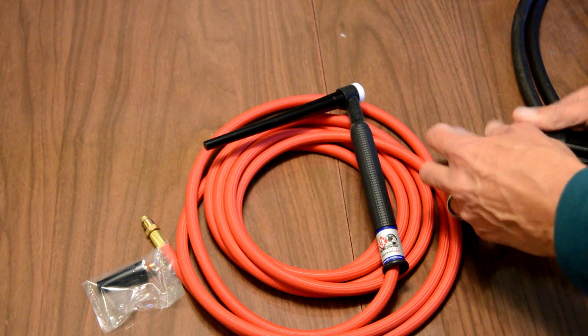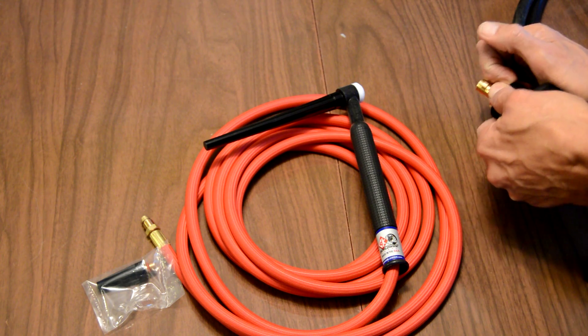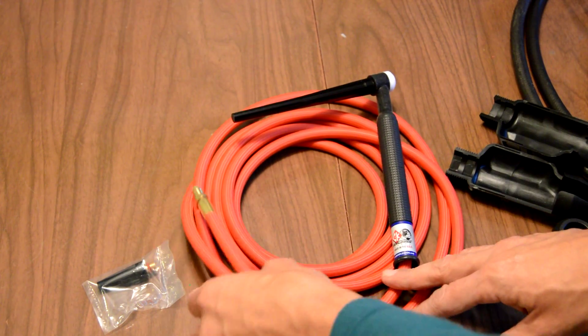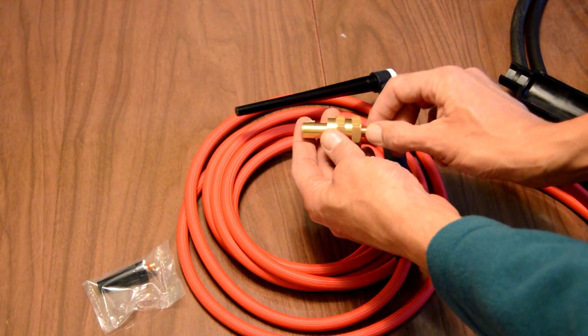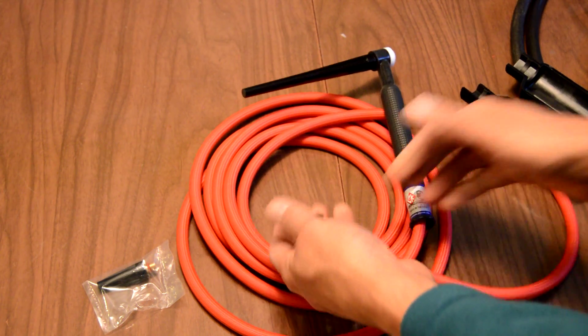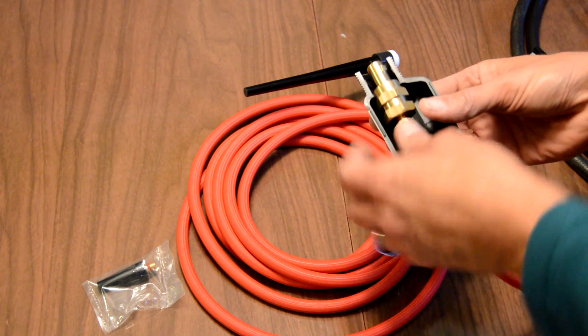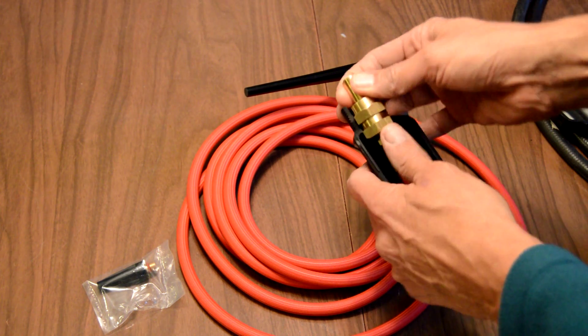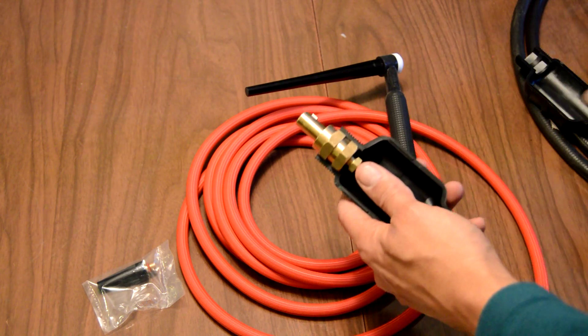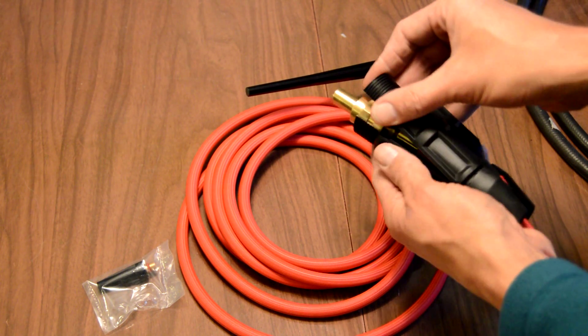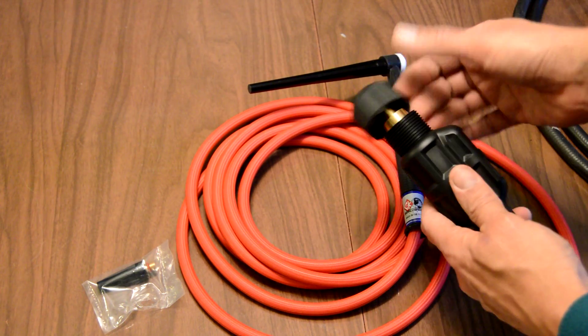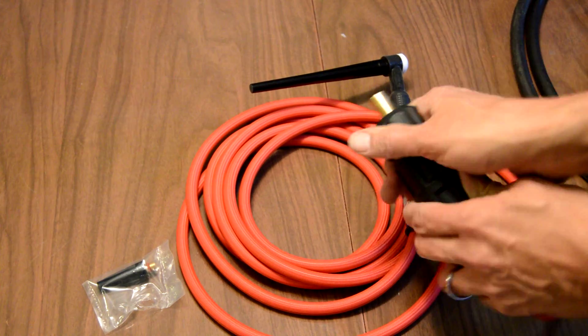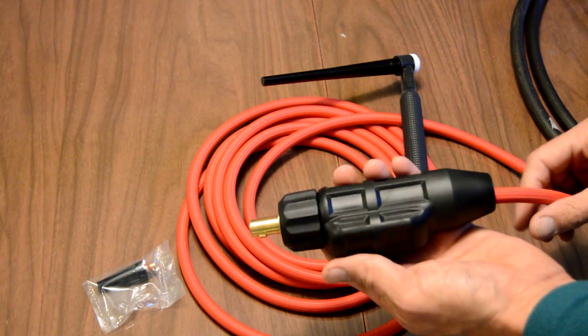This comes apart here. There we go. It basically comes apart and then you just basically convert it over where that fits right up into my Lincoln welder. I've wanted to get one of these for a while. It'll definitely help the welding.